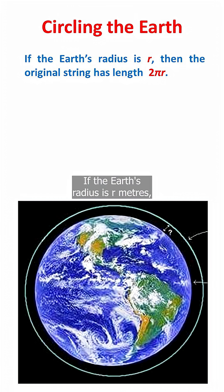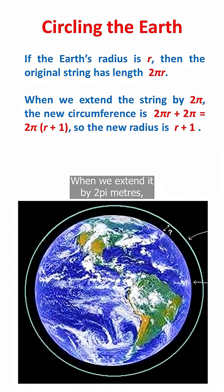If the Earth's radius is r metres, then the original string has length 2πr. When we extend it by 2π metres, the new circumference is 2πr plus 2π, which is 2π times r plus 1.